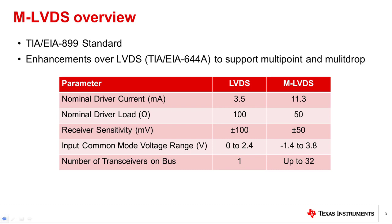MLVDS is an industry standard that builds on the LVDS standard by adding enhancements to support multipoint and multi-drop configurations. One of these enhancements is that MLVDS increases driver current to 11.3 milliamps. This is needed to drive the increased load due to the double termination used in MLVDS and also due to the loading from multiple transceivers on the shared bus.